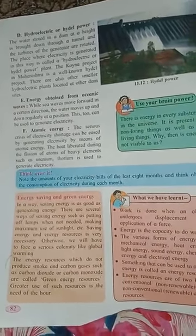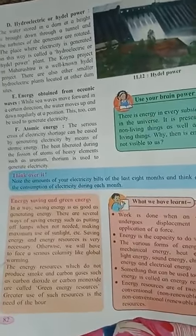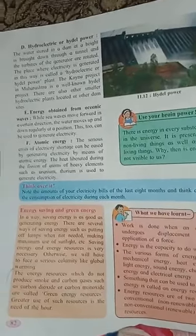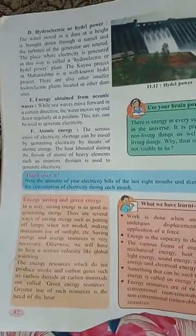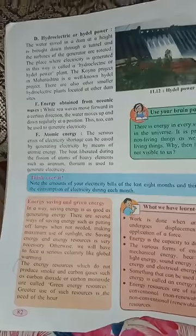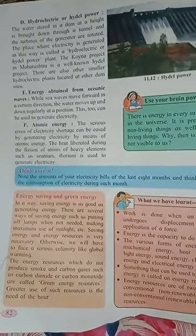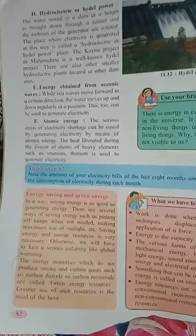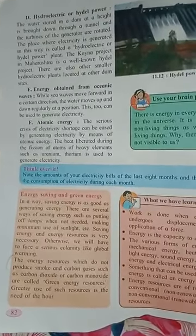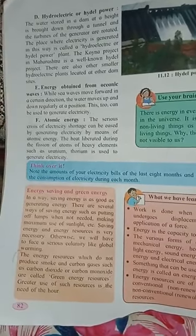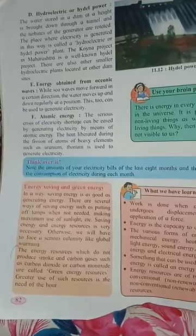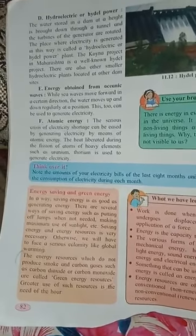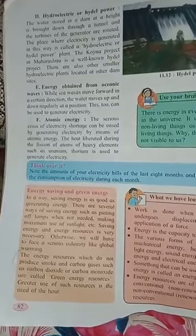So all these things are to be remembered. The main point to remember: the sun is the main source of energy — through this we get light, heat, and everything. So in this way you have to save energy. As much as possible you have to save energy, don't waste anything. There are several ways of saving energy, such as putting off lamps whenever not needed and making maximum use of sunlight.